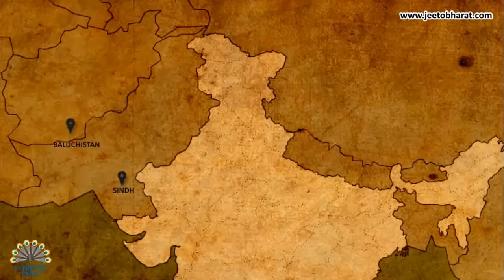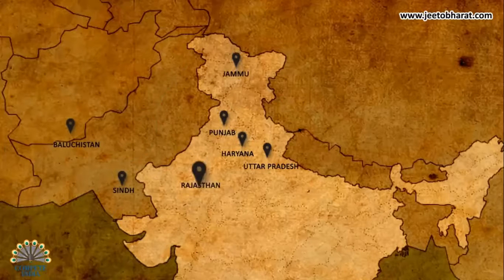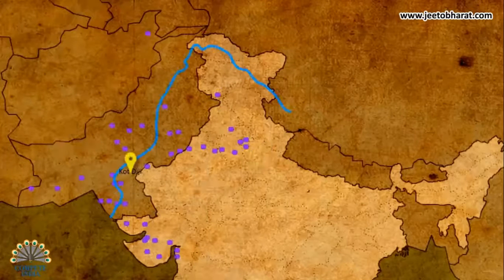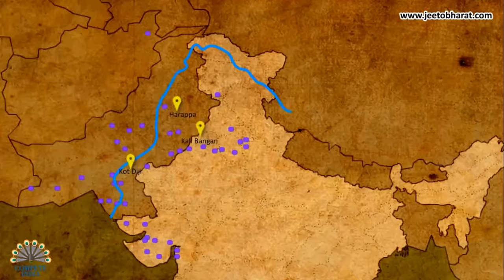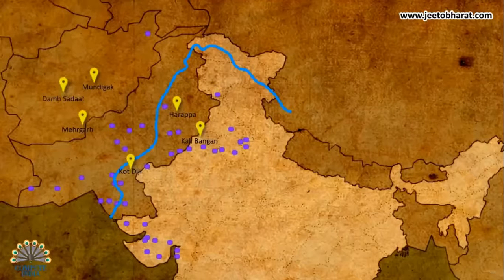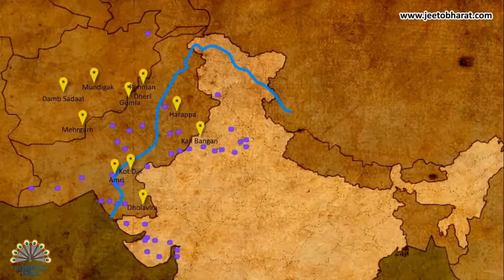The Harappan culture covered Sindh, Sukhtagandar in Balochistan, Punjab, Haryana, Western UP, Jammu, Northern Rajasthan, Gujarat, and Northern Maharashtra. The important Harappan sites include Mohenjodaro, Harappa, Kalibanga in North Rajasthan, Mehergar in Balochistan, Mundigak in Southern Afghanistan, Dam Sadat in the Quetta Valley of Balochistan, Amri near the Indus River, Gumla in Gomal Valley, Rehman Dehri, Dholavira, and Lothal.